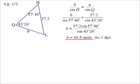So subbing in, multiply by the sine of 57°46', and punch the buttons on our calculator and we get, well, I've done mine to one decimal place, so 45.8 units. So that's finding a side.